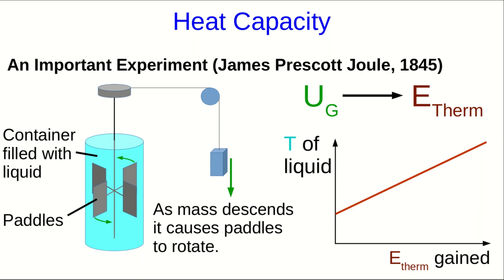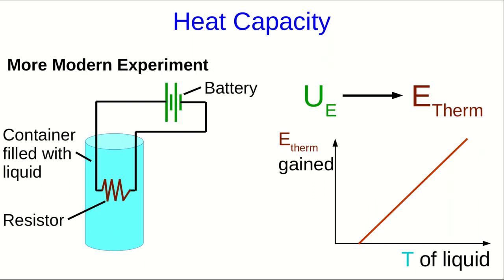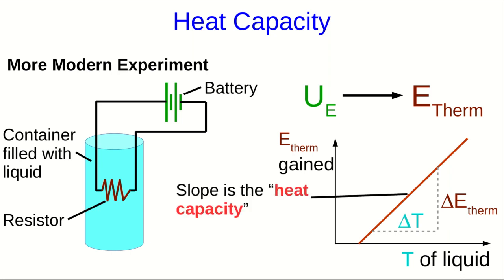But we would do this experiment today to measure something else. To do this measurement, first of all, we would tend to flip the graph. And second of all, in the modern experiment, we probably wouldn't use a descending mass because we can make electrical measurements more easily. And so we would use an electrical setup where we run current through a resistor that produces thermal energy, which is given to the liquid. But other than that, it's basically the same experiment. And now, the thing we actually measure is the slope of this line. The meaning of that slope is something that we call the heat capacity of the liquid.